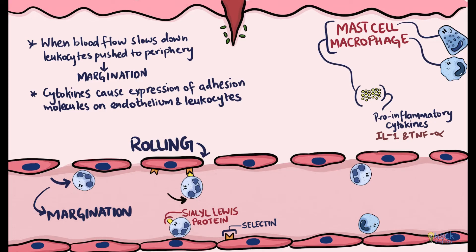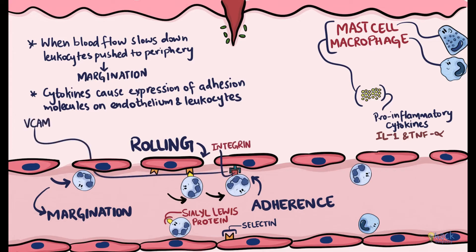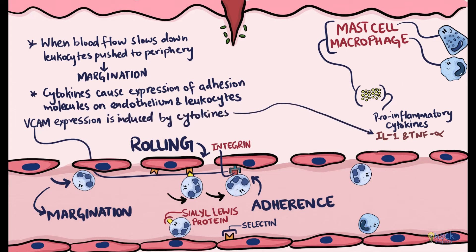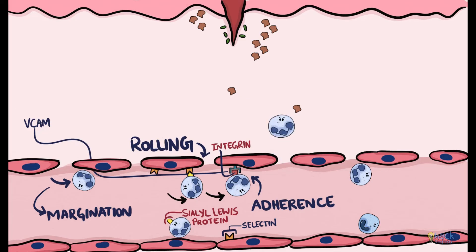Rolling and slowing down helps leukocytes firmly adhere to the endothelium. This adherence is accomplished by binding of surface proteins on leukocytes called integrins to adhesion molecules on the endothelium called VCAM or vascular cell adhesion molecules, whose expression is induced by pro-inflammatory cytokines like interleukin-1 and tumor necrosis factor alpha. The next step involves transmigration of adherent leukocytes through endothelial gaps to the extravascular space, a process called diapedesis, which is induced by chemokines.